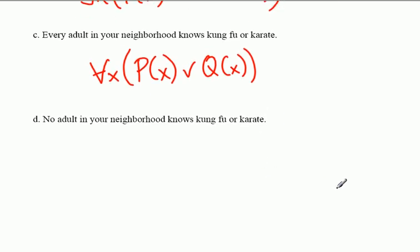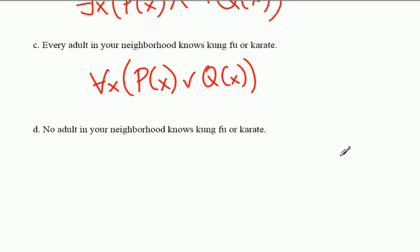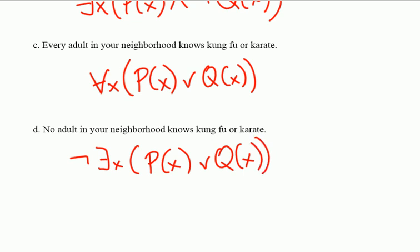No adult in your neighborhood knows kung fu or karate. This is a nice one. Here's what you could do. It's not the case, right, that there exists an x such that P(x) or Q(x). So literally that says it's not the case that there exists an adult in the neighborhood such that that adult knows kung fu or that adult knows karate. Now that's a little bit lazy, I think.